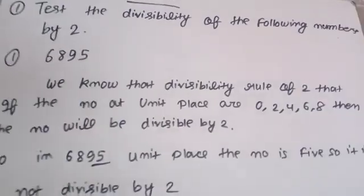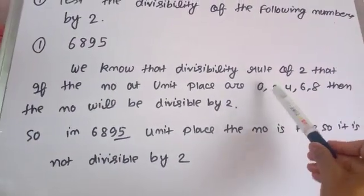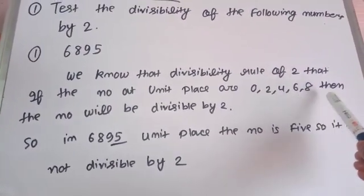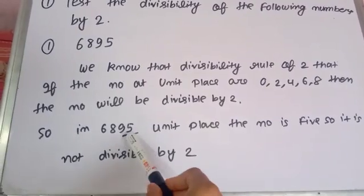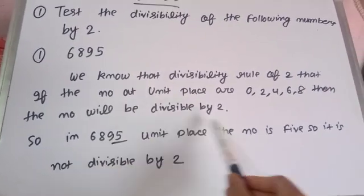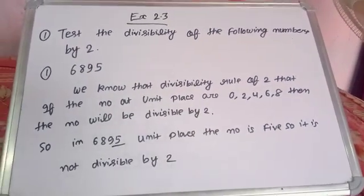Means at unit place the number should be 0, 2, 4, 6 and 8. So unit place you can see here we have 5. So this number will be not divisible by 5.